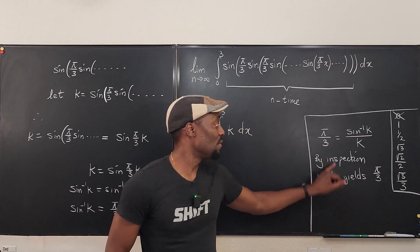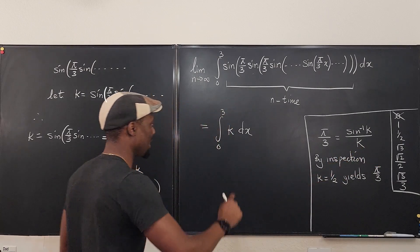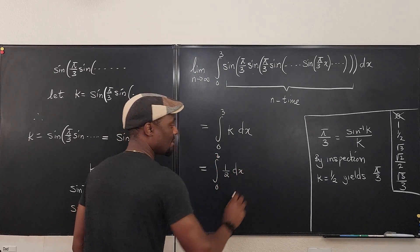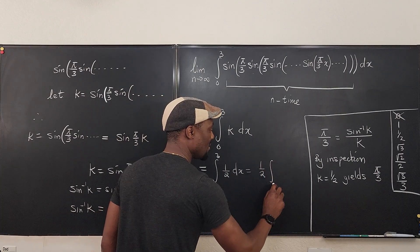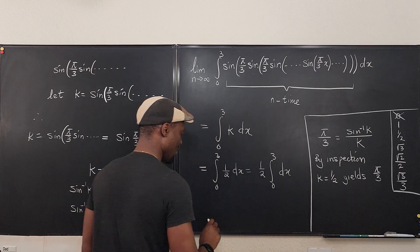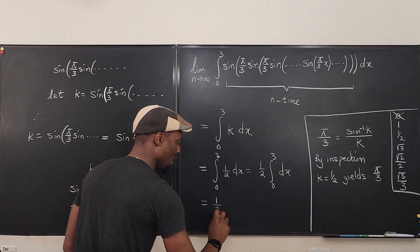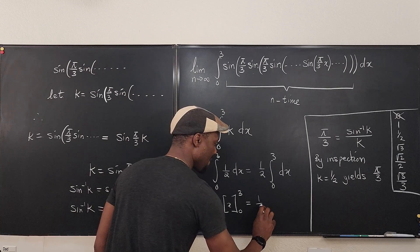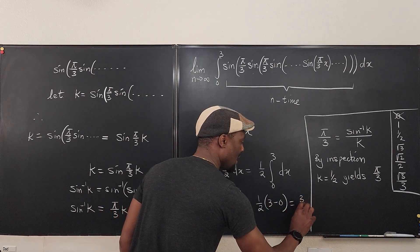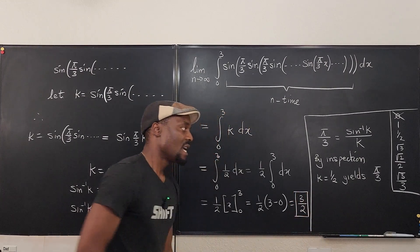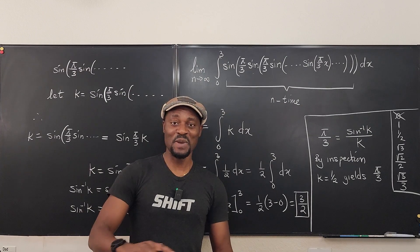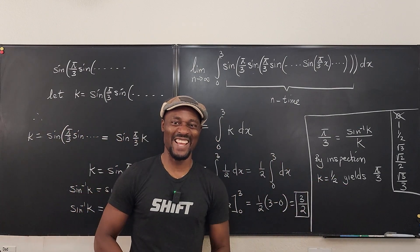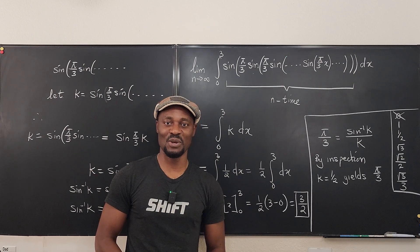Since k equals one half, we can go back and integrate. The integral from 0 to 3 of k dx equals one half times the integral from 0 to 3 dx, which gives one half of x evaluated from 0 to 3, which is one half of 3 minus 0, giving three over two. That is the solution. Hope you learned something — leave a comment, like and share this video, be subscribed, and thanks for supporting this channel. Never stop learning — bye!